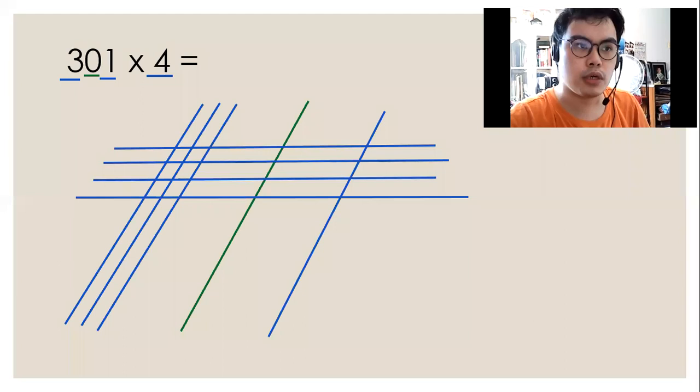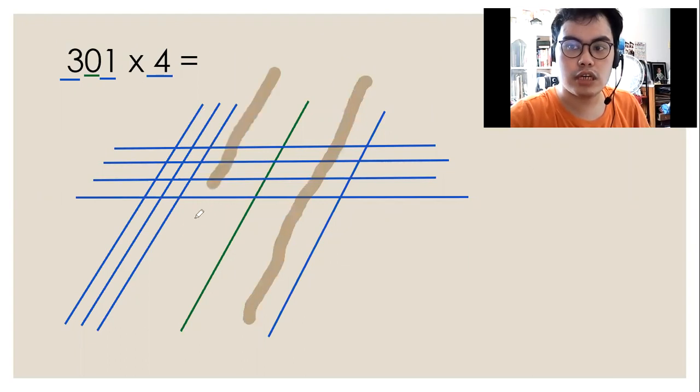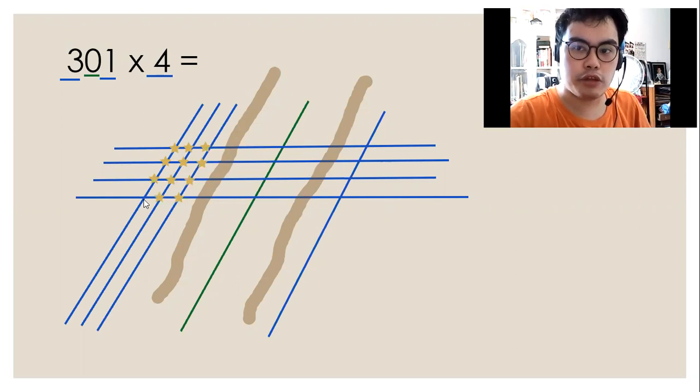So now we're going to form dividers. The stars are the points of intersection. Do not place stars where the green line intersects because the green line represents zero. It represents zero, so any number multiplied by zero will always be zero.